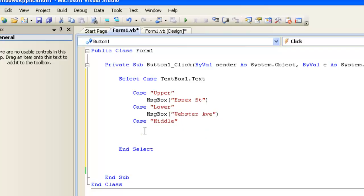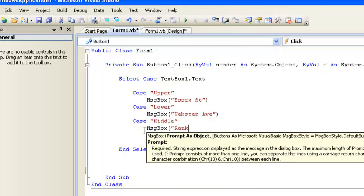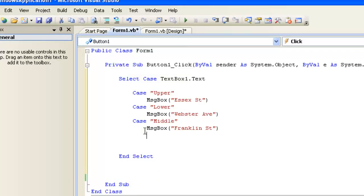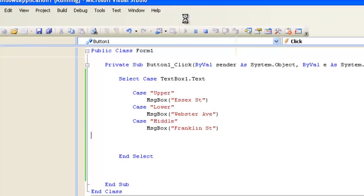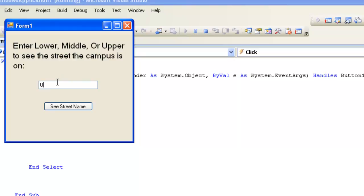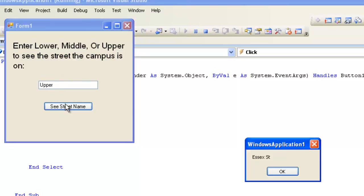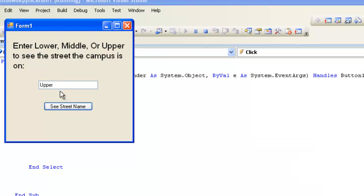And if it's the middle school, well, that's on Franklin Street. Now here's an important one. If we were to run the program right now, it would work just fine. We can put in upper, and that would come Essex Street, we could put in middle, and that would come Franklin Street. But what if I put in something totally wrong, like something that didn't exist, like the college, the Prospect Hill Academy College. If I pressed it, nothing happens.